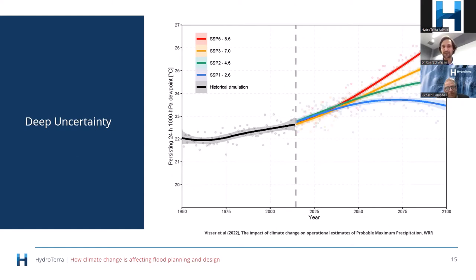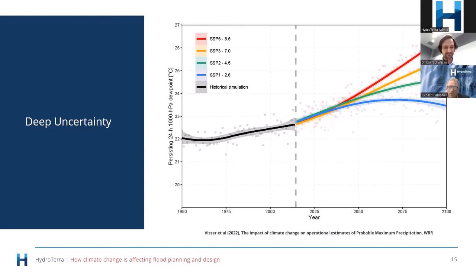Unfortunately, we're faced with a problem called deep uncertainty. On the x-axis I've got the time in years; on the y-axis is the persisting dew point temperature, which is used in probable maximum precipitation estimates. The different colours are different scenarios modelled in climate change models. The point is that the four curves are diverging — we don't really know what path we're on. We're in a position where we design based on a stationary assumption that the climate won't change, but we don't even know how the climate is going to change. There's a very good argument for our guidance and infrastructure to be continually updated.